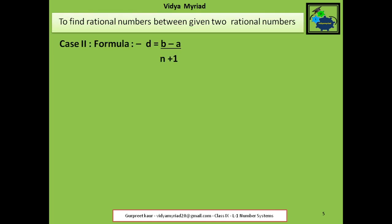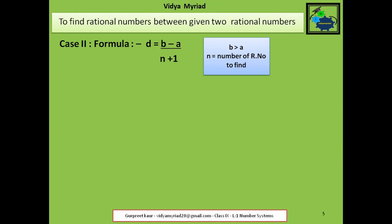Next I am going to tell you how to find rational numbers using another formula. You have two numbers A and B. To find out D, the formula is: D = (B minus A) upon (N plus 1). Here B should be greater than A. N will be the number of rational numbers you need to find. After finding D, you write the series: the first rational number is A plus D, the second is A plus 2D, the third is A plus 3D, and so on.